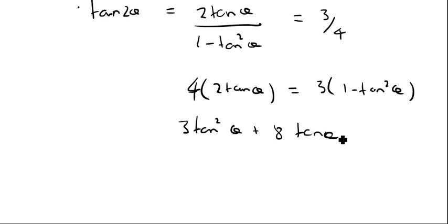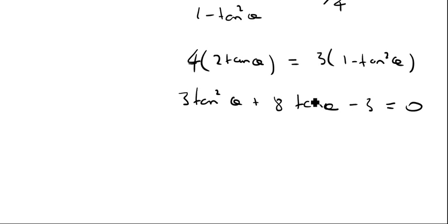As soon as I get something looking a little bit like this, I should be expecting to use some kind of quadratic. So let's just write u equals tan θ. Now we've got 3u squared plus 8u minus 3 is equal to 0.